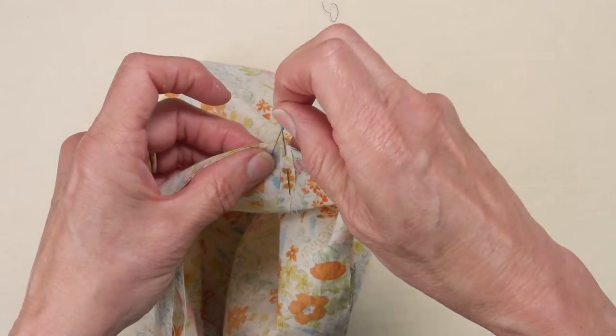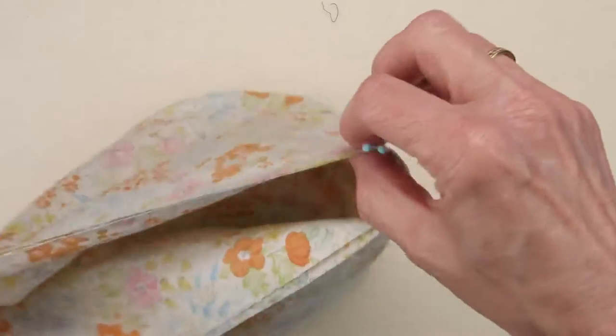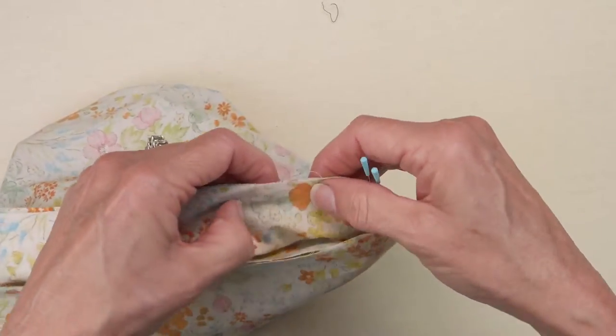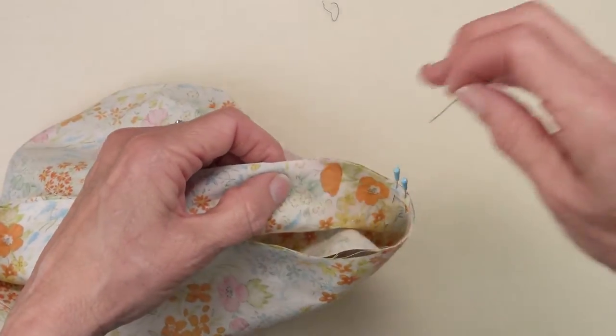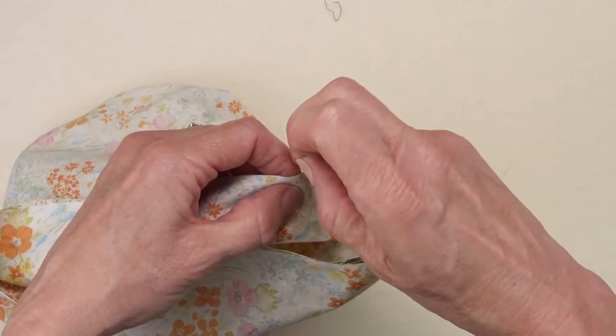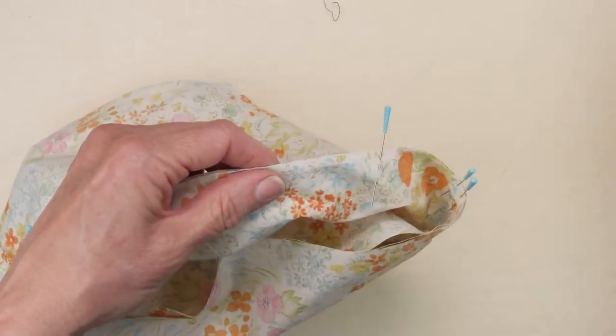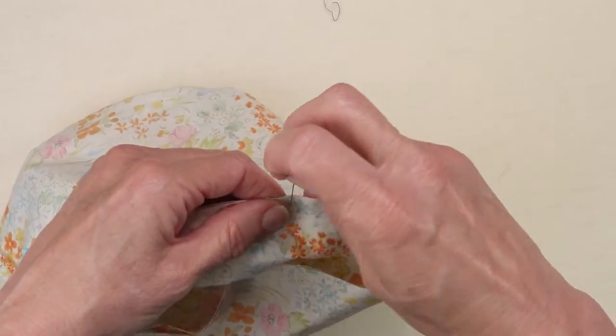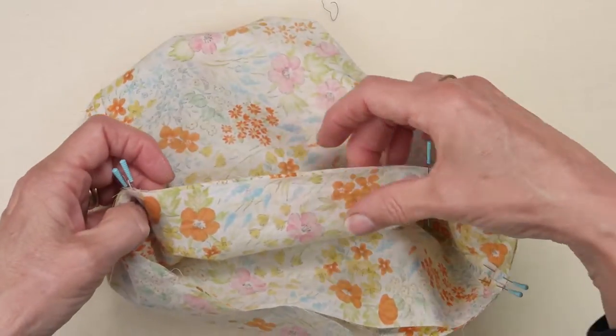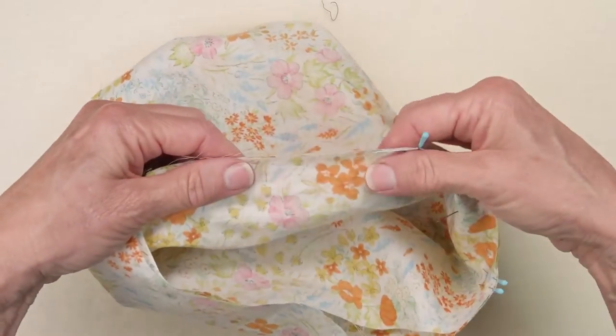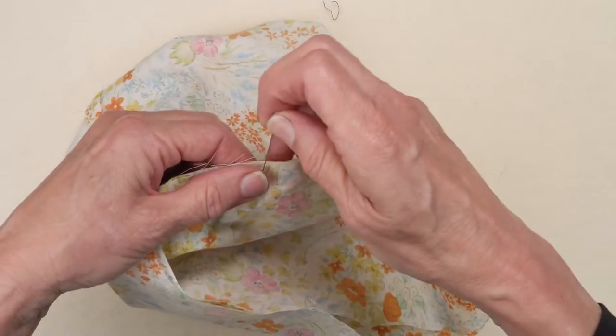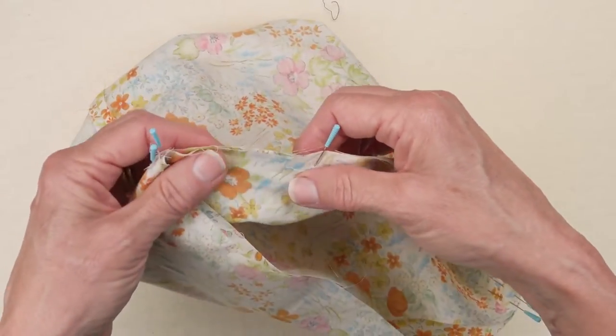I want to leave a space that's two or three inches long to turn the bag right side out. And I'm going to do that on one of these long edges that doesn't really matter. So I'm going to take this to the machine and sew it with a quarter of an inch seam allowance. And then I'll be back.